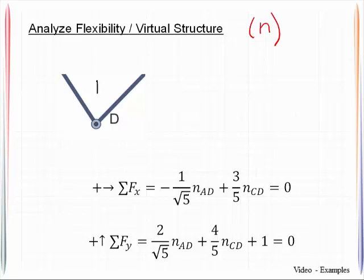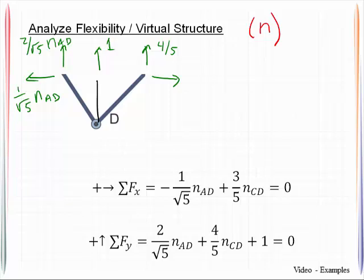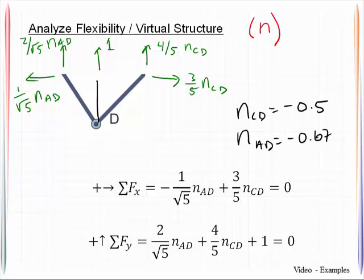The next thing we want to do is analyze the flexibility structure, which we're also noting can be doubled up as the virtual structure. So we'll call that the little n values. We know that we have placed a unit load in the vertical member. So we simply need to break these out into their components. So this is 2 over the square root of 5 and I'm going to use little n now for AD. 1 over the square root of 5 little n AD. 4 over 5 little n CD and 3 over 5 little n CD. We've got the two equations of equilibrium written down below. We go ahead and solve for the remaining unknowns. n CD is equal to negative 0.5 and little n AD is equal to negative 0.671.